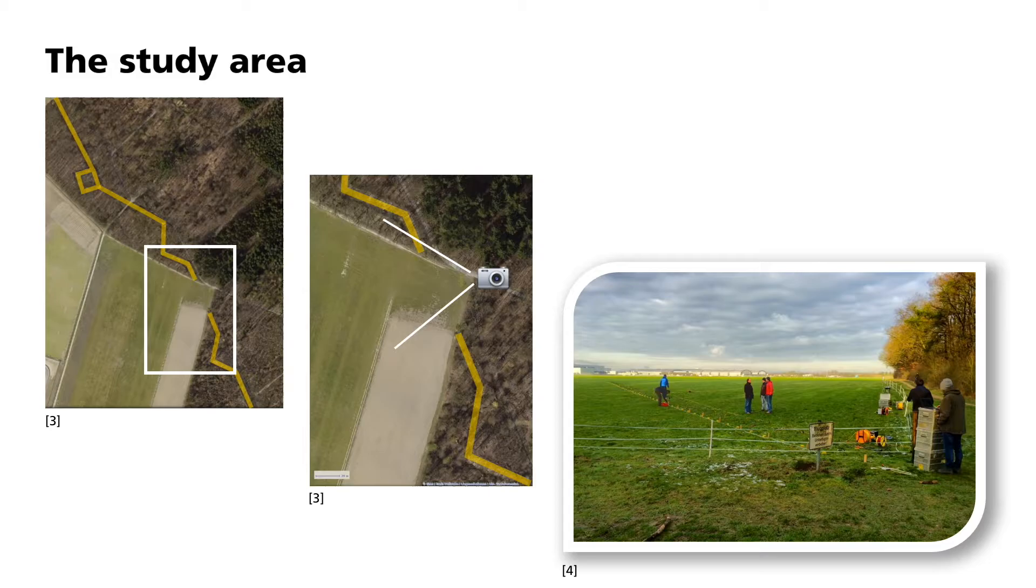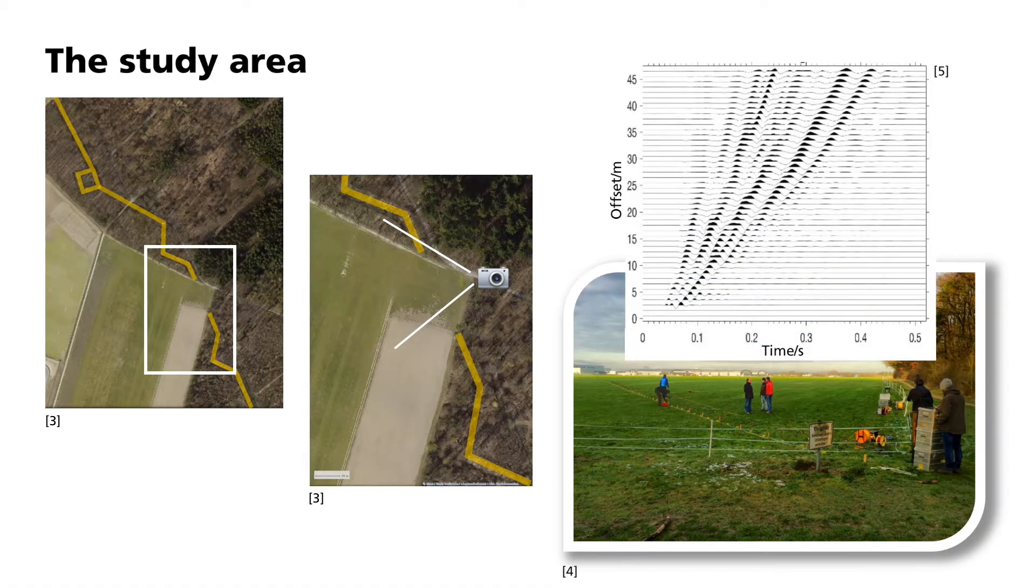This consisted of 48 geophones. Hammer impacts on a metal plate were used as the seismic sources. These were executed several times and then stacked vertically to increase the signal-to-noise ratio. Here you can see a recording. The aim of the evaluation was to obtain background information from the recorded waveforms.